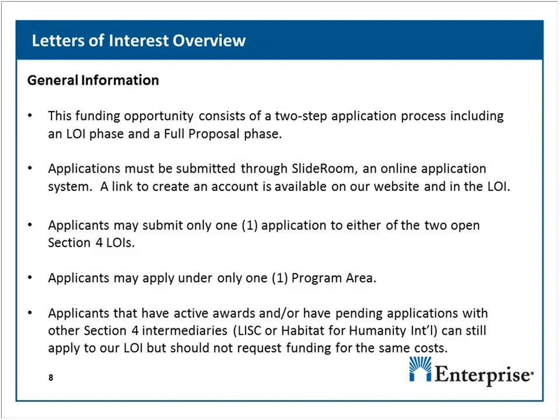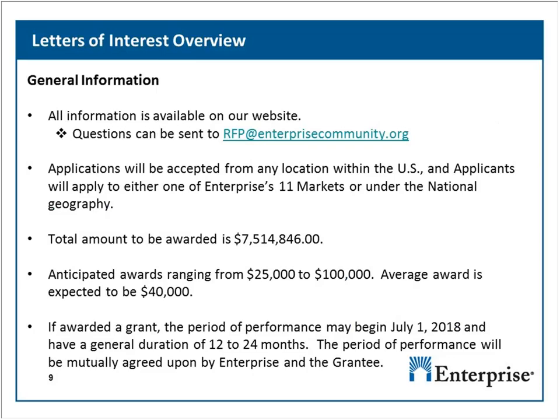Applicants with active awards or pending applications with other Section 4 intermediaries, such as LISC or HABITAT, can still apply to our LOI, but should not request funding for the same costs. Everything you need is available on our website, and questions can be sent to rsp@enterprisecommunity.org. We will accept applications from any location within the U.S., and applicants will be able to apply to either one of Enterprise's 11 markets or under the national geography.